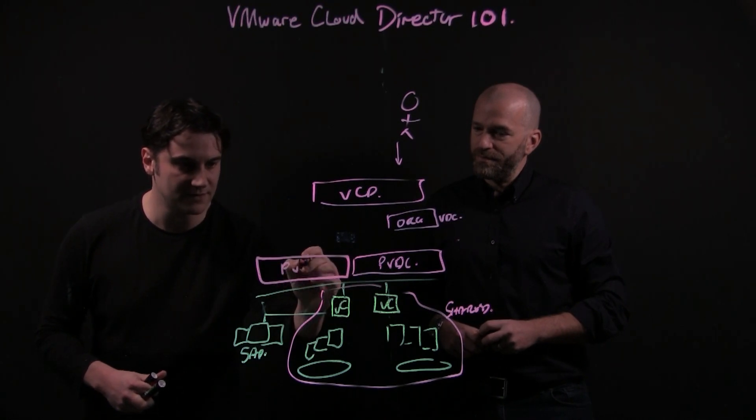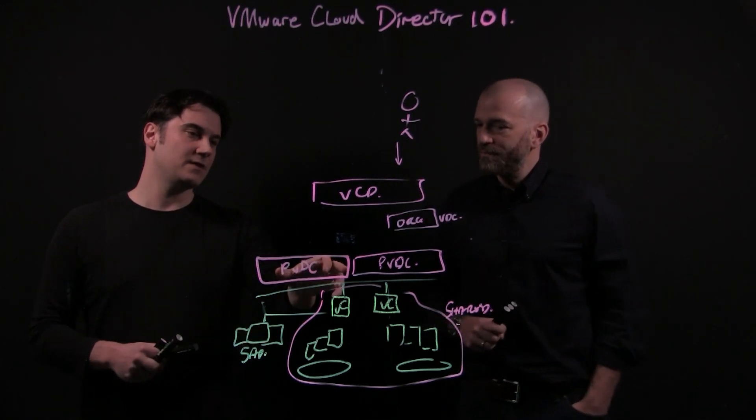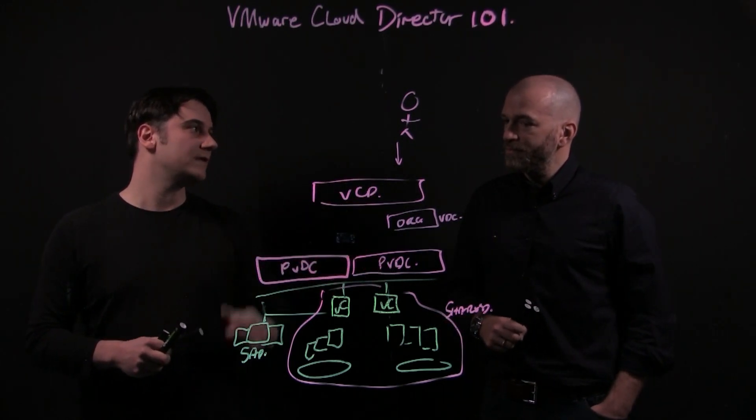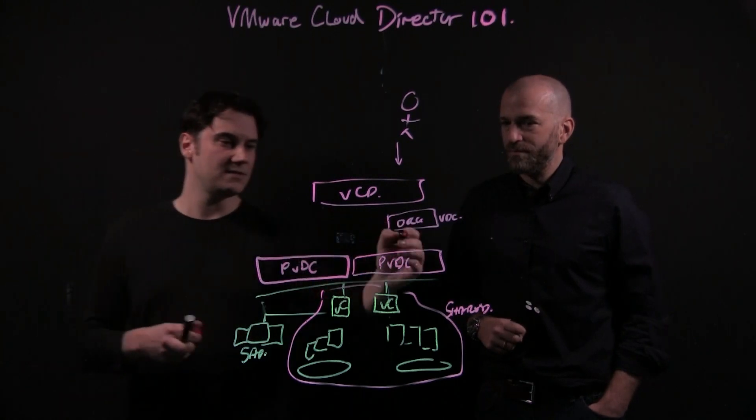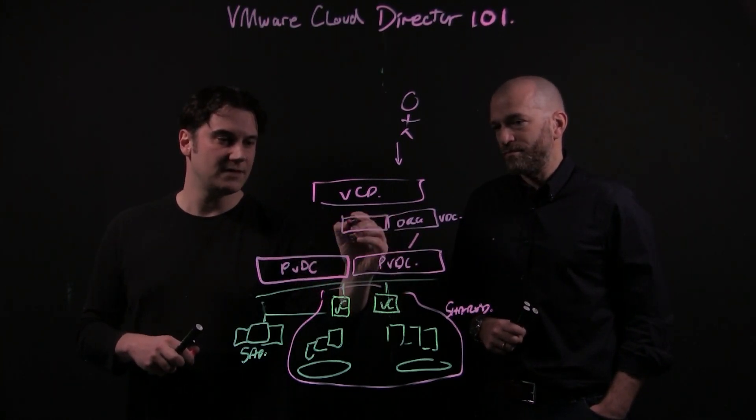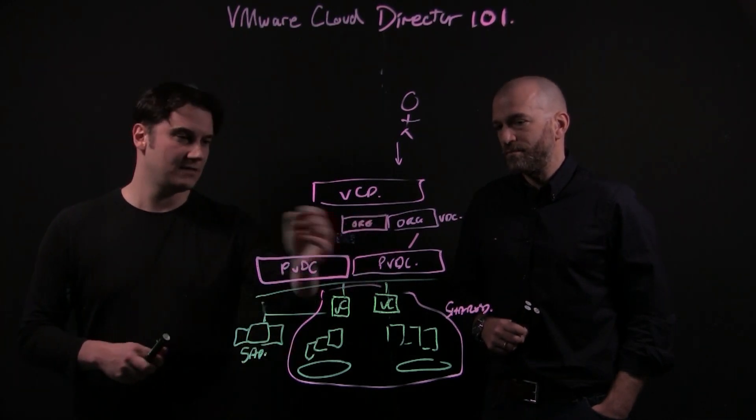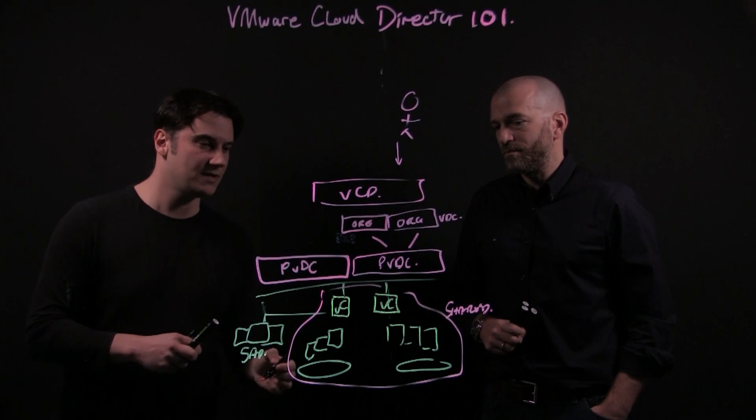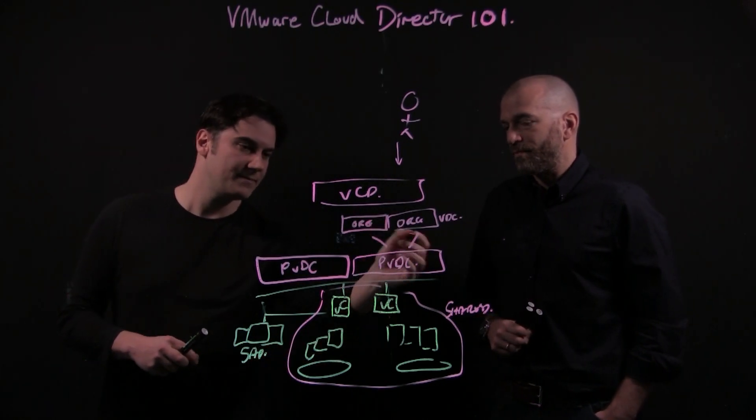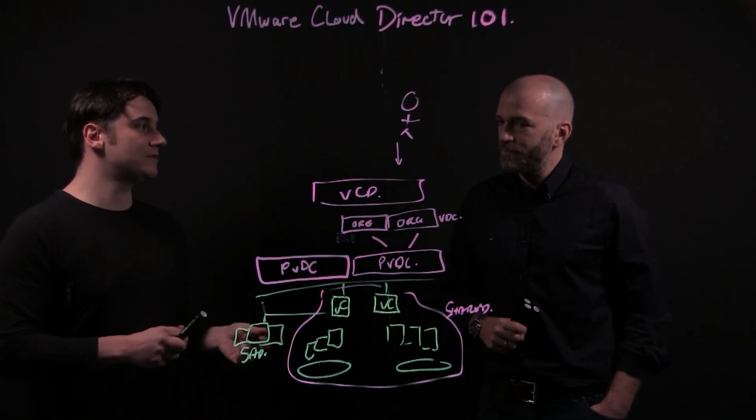So we declare those, and it now means we can portion allocations of resource into multiple org VDCs. We could say that this is a mapping, and we could even say that actually this provider VDC is going to be split into two org VDCs, and we have a similar picture on the other side. Now what's actually happening here is if I then create an org VDC in vCloud Director, that's driving automation.